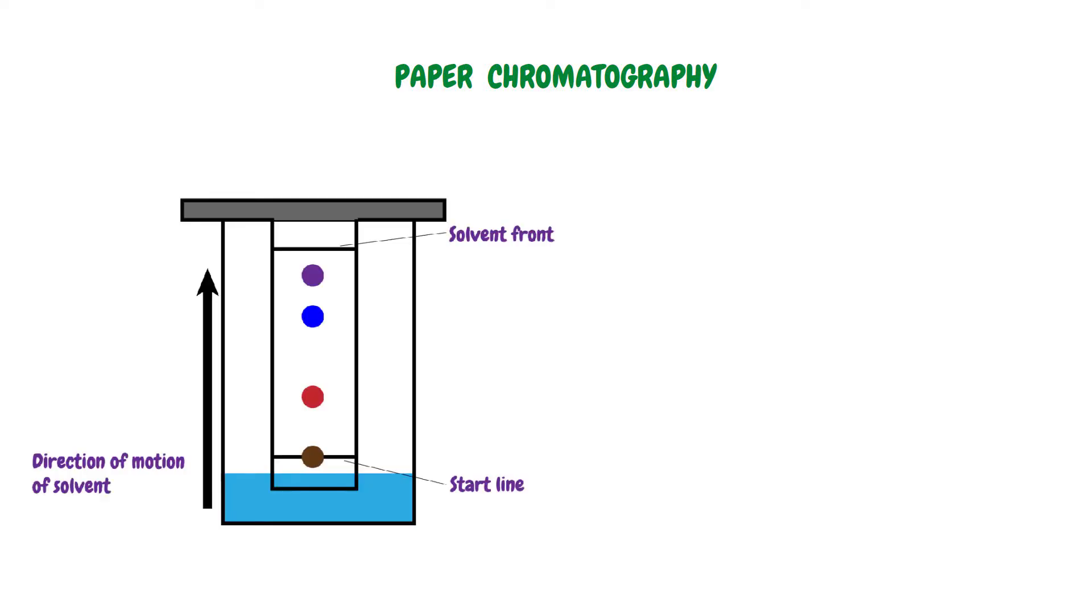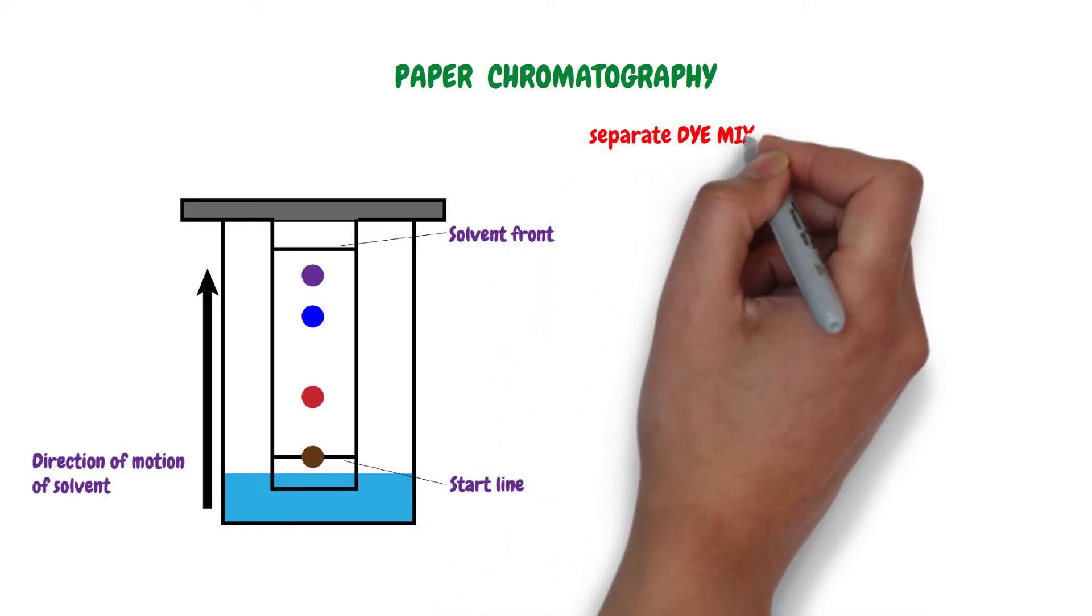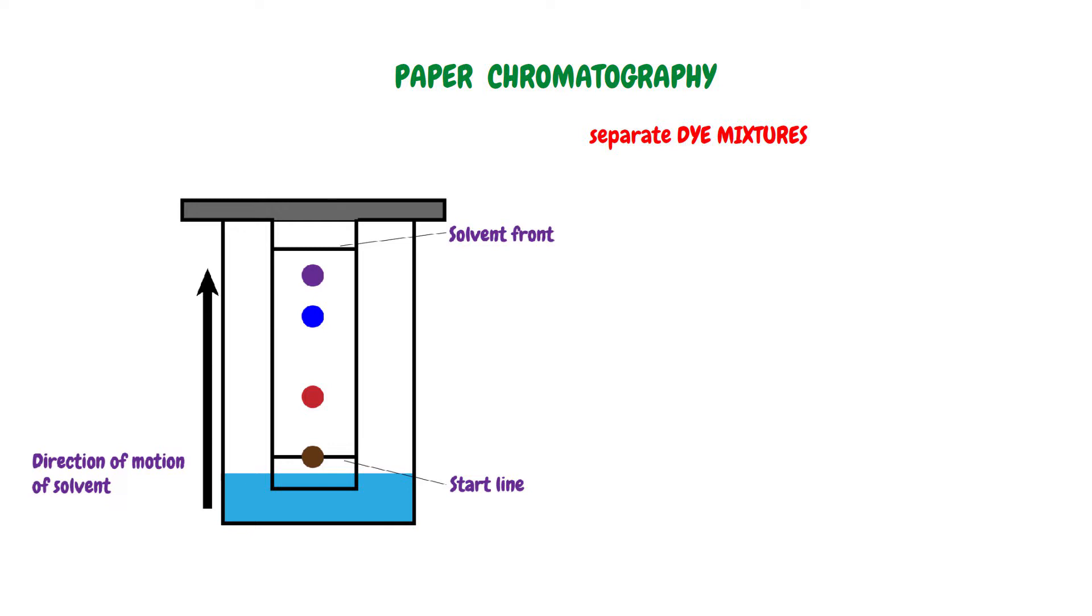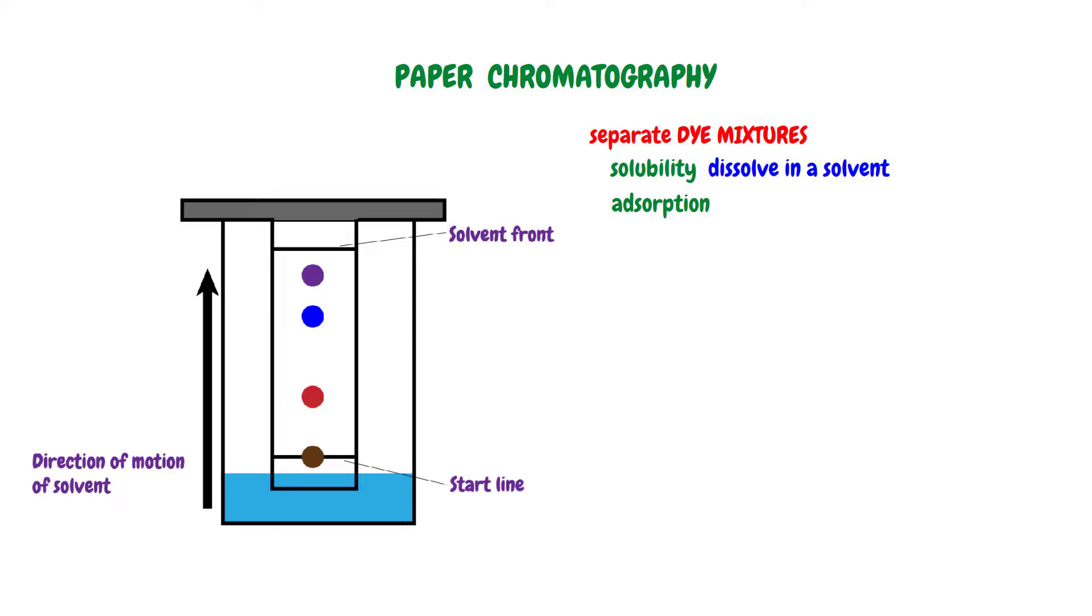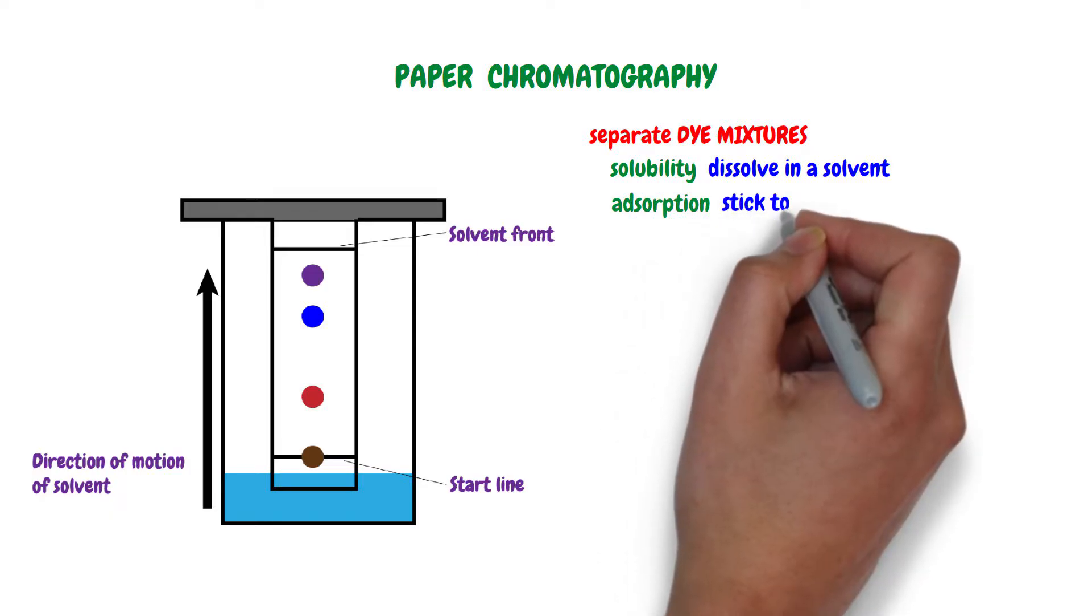Paper chromatography is used to separate dye mixtures. The technique relies on the principles of solubility and adsorption to achieve effective separation. Solubility is the capacity of a substance to dissolve in a solvent. Adsorption is the capacity of a substance to stick to surfaces.